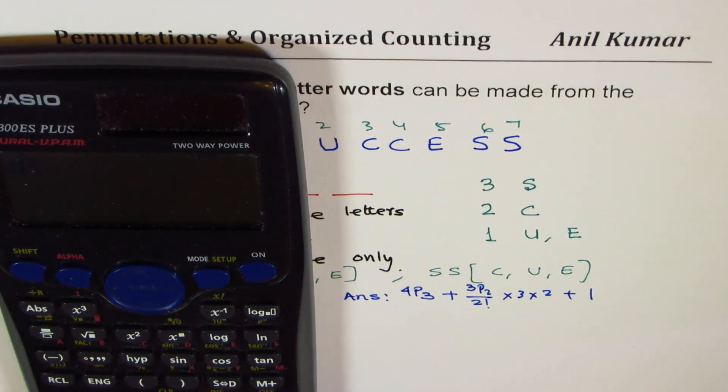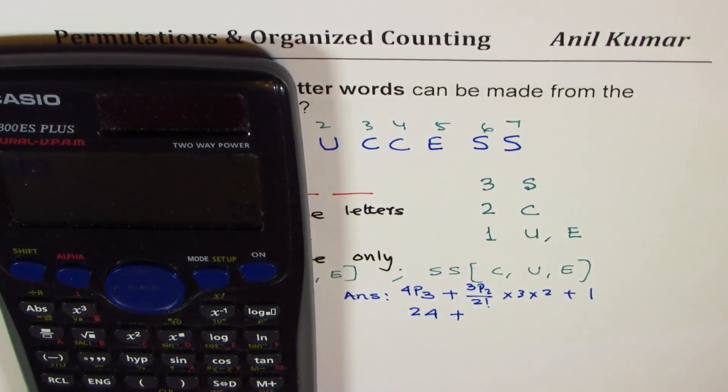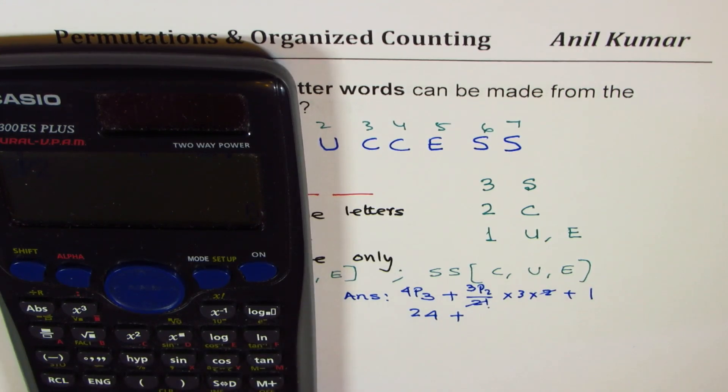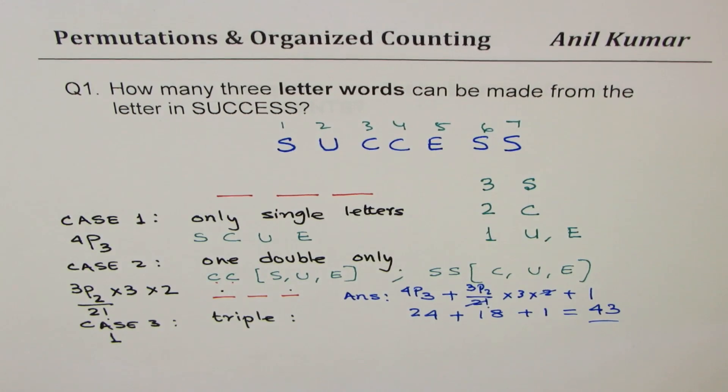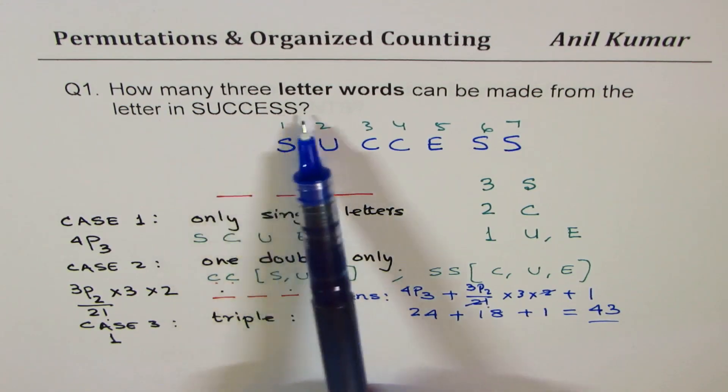So we have 4P3, which is 24, plus 3P2 equals 6, so 2 factorial and 2 factorial gets cancelled. We'll just multiply 6 by 3, we get 18 here, and plus 1. And that gives you 24 plus 18 plus 1 as 43.